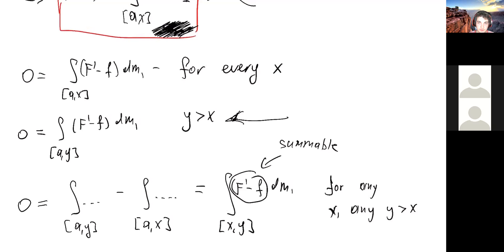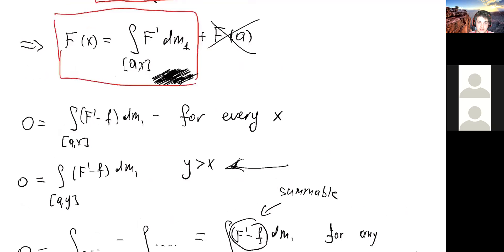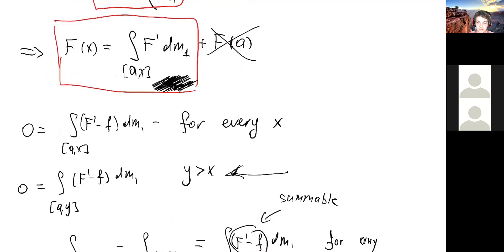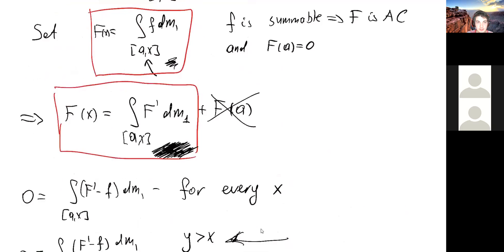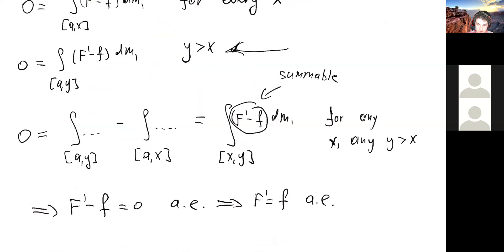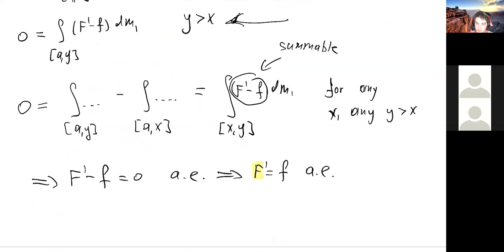F′ = f almost everywhere — this is exactly what we wanted. Capital F is the integral, and its derivative equals little f almost everywhere. That's the statement of the theorem. Hooray, everything is done.